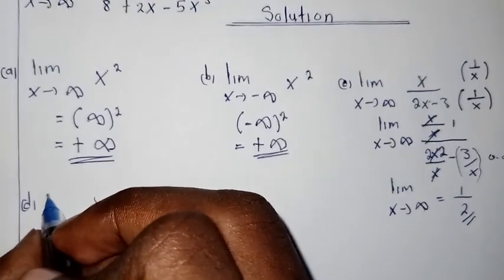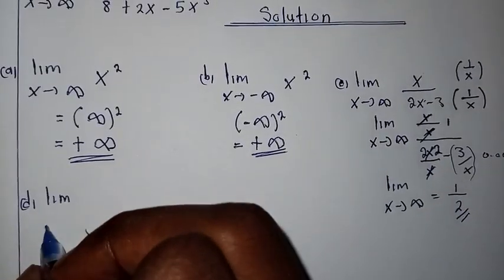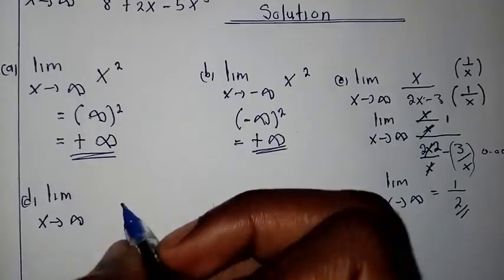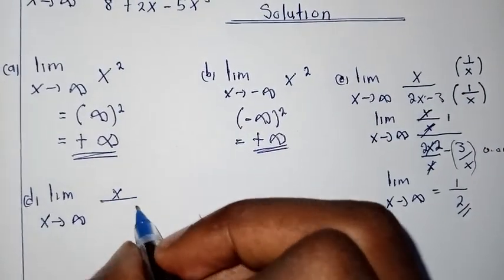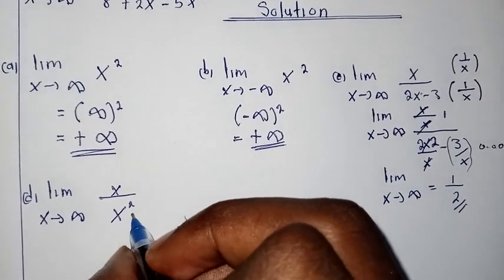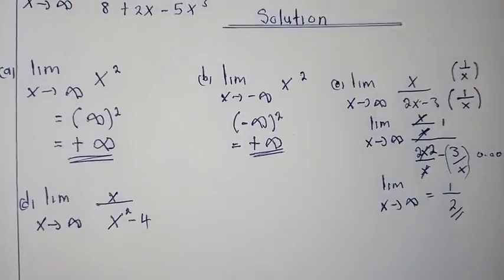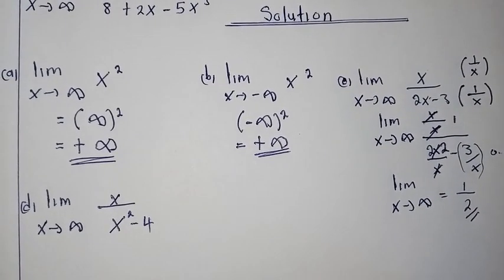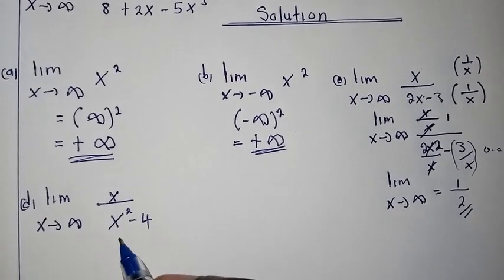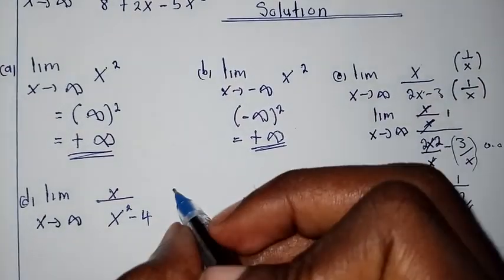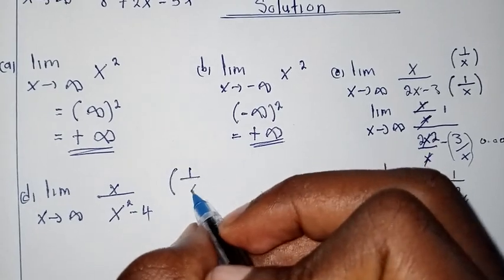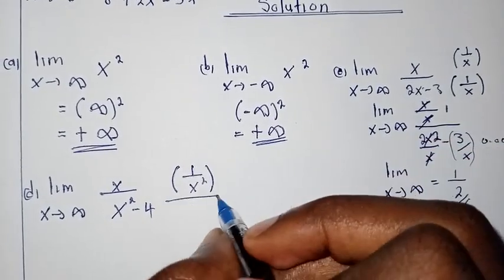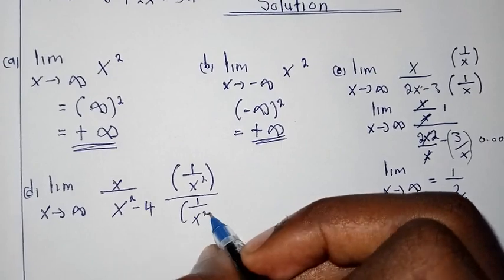Part D is very interesting. We have the limit as X is approaching infinity of X over (X² minus 4). The highest power of X is found on the denominator, which is X², so we use that to multiply everything. We multiply numerator and denominator by 1 over X², giving us the limit as X approaches infinity of (X/X²) over (X²/X² plus 4/X²).